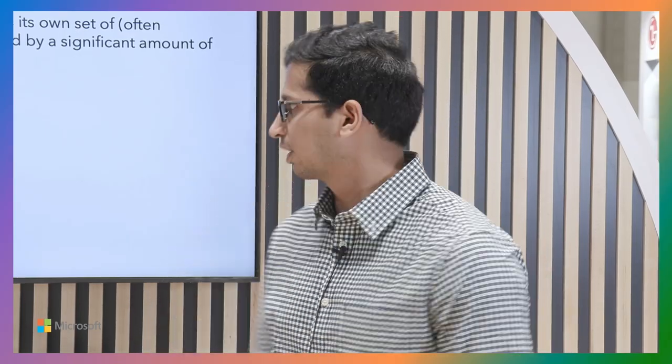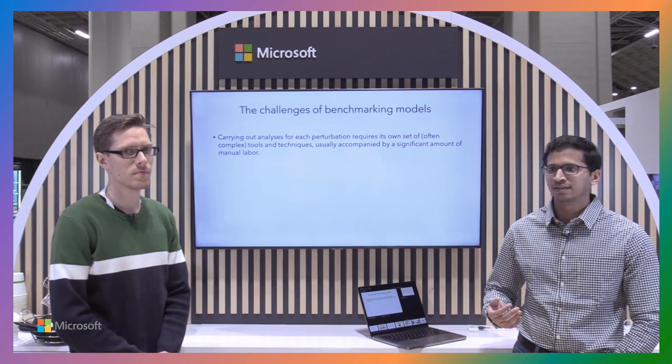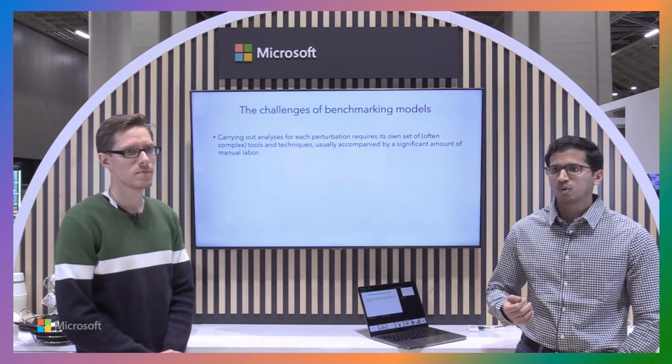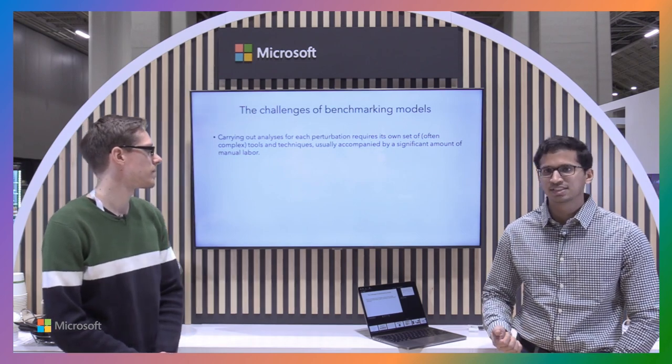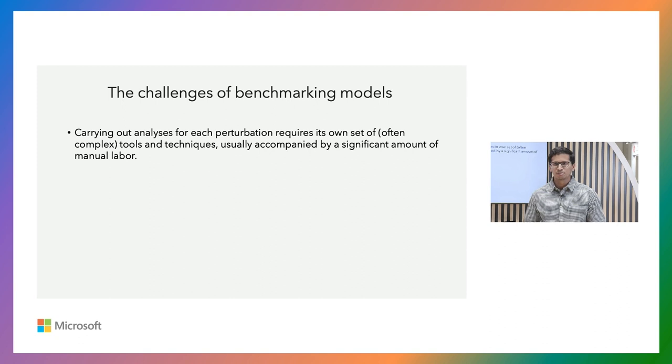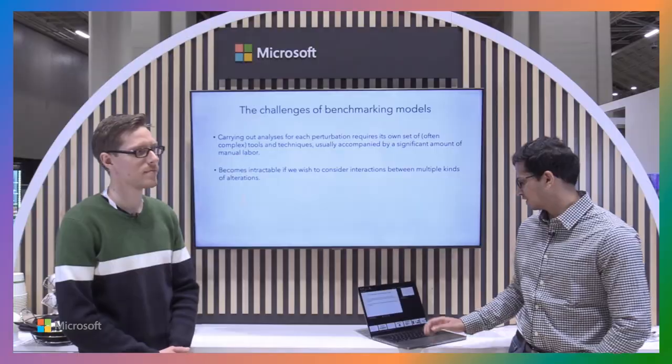But there are several challenges when it comes to benchmarking models and understanding how they work. We talked about several perturbations in the previous slide, and all of these different kinds of perturbations require a very different way of setting them up and doing the analysis. It involves a lot of manual labor such as changing the images, transforming the objects, changing the rendering schemes. And if you want to combine several of these perturbations together, to compose different kinds of transformations, it's fairly intractable and challenging to do.